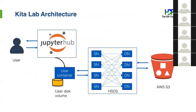Here's how the architecture works. A user connects to the JupyterHub endpoint. Once signed in, JupyterHub spins up a new container with the environment, which has a disk volume attached as a local POSIX scratch pad. The environment is configured to talk to the data server — the service nodes and data nodes — which talk to S3.